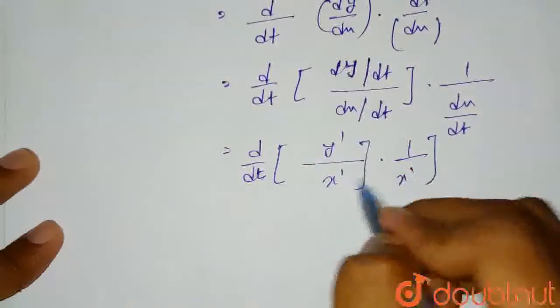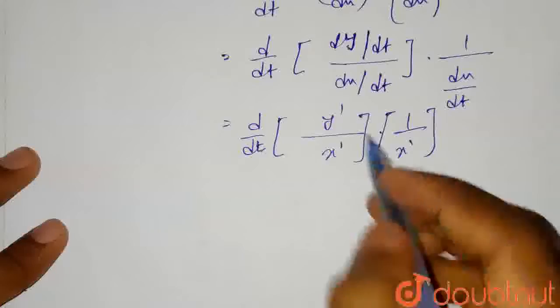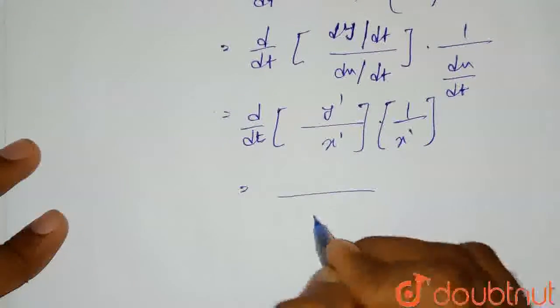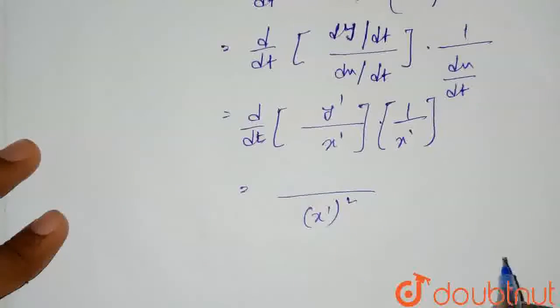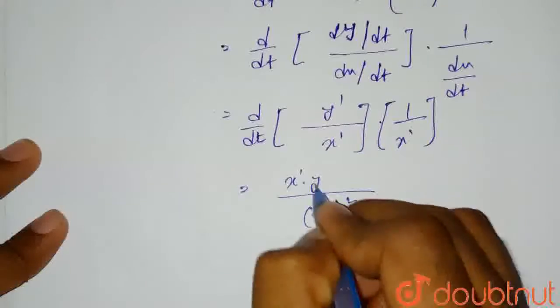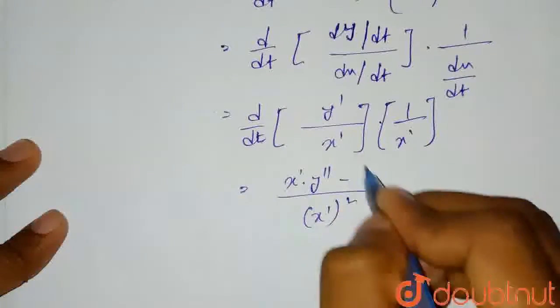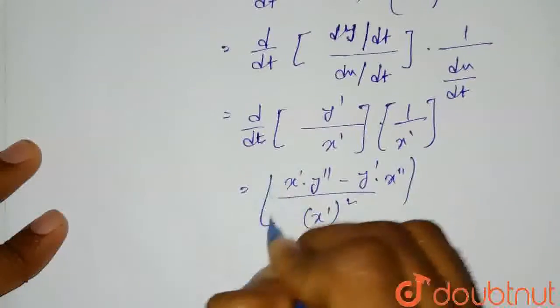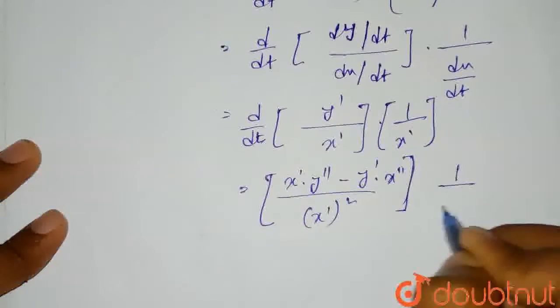The differentiation of this term will equal (x')². The differentiation of y' will be x' into y'' minus the differentiation of x', which will be y' into x'', all multiplied by 1 divided by x'.